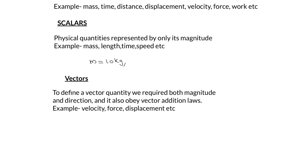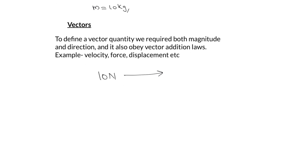For example, if a force of 10 newtons is acting on an object, that alone does not completely describe the force. Along with 10 newtons, we must specify the direction — whether it acts towards the right, left, upward, downward, etc. Similarly, for displacement: if an object is displaced by 5 meters to the right, it reaches one position; if displaced 5 meters to the left, it reaches a different position. So displacement can only be completely represented by specifying both magnitude and direction.